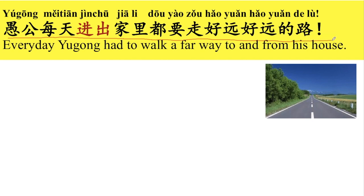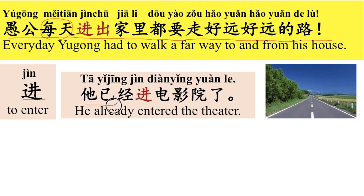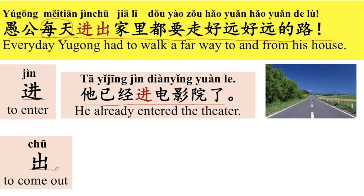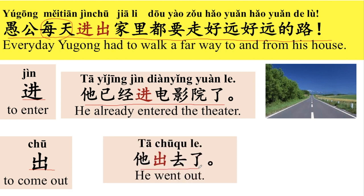愚公每天进出家里都要走好远好远的路。好，我们来看一下。每天就是everyday. 进 means to enter. For example, 他已经进电影院了，He already entered the theater. 出 means to come out. 他出去了，He went out. 那愚公每天进出家里。